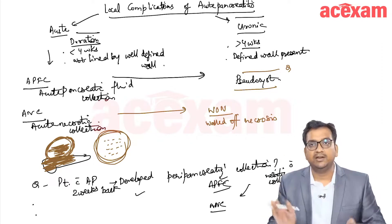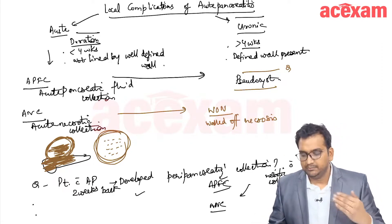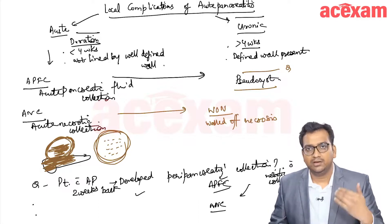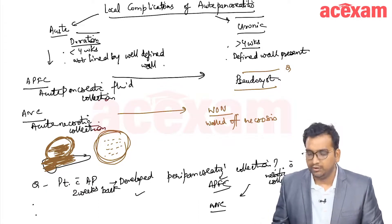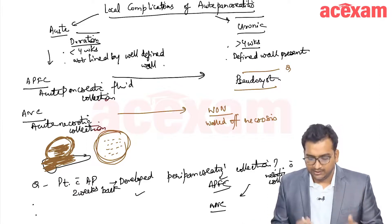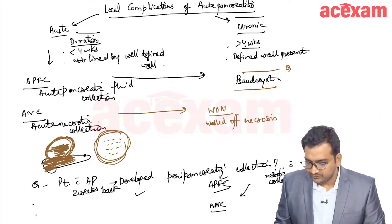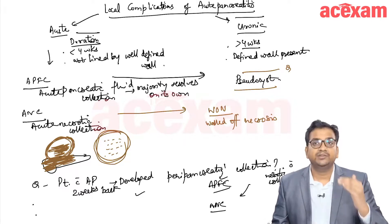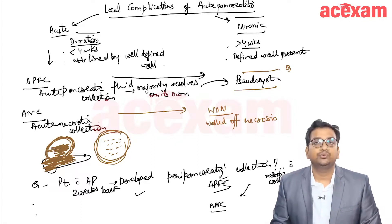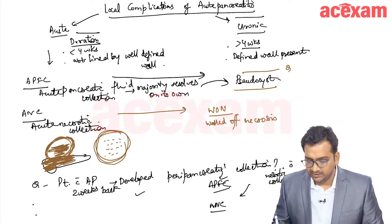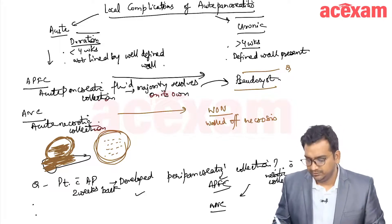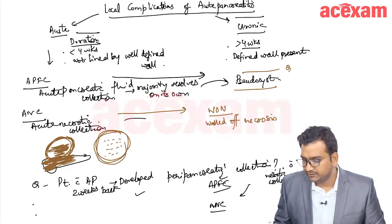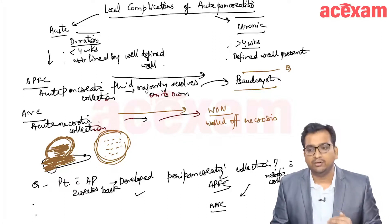After four weeks, the collection becomes lined by chronic granulation tissue and it becomes a pseudocyst. If there is necrosis, it becomes walled-off necrosis. Acute pancreatic fluid collection majority resolves on its own; those that do not resolve give rise to pseudocyst. Similarly, acute necrotic collection majority will resolve on its own; those not resolving will give rise to walled-off necrosis.